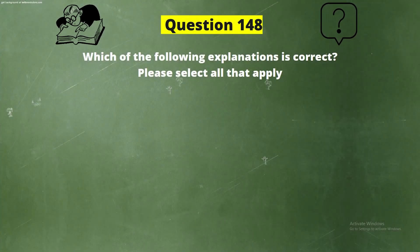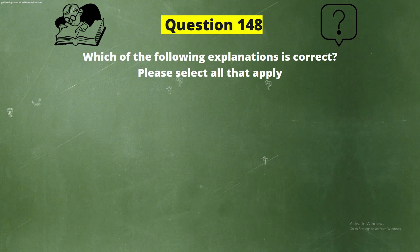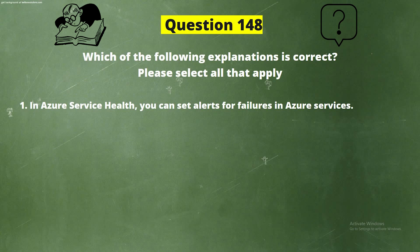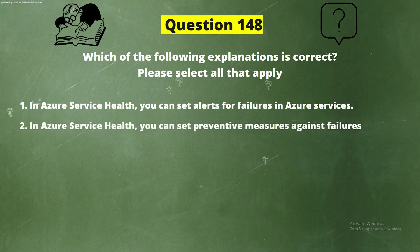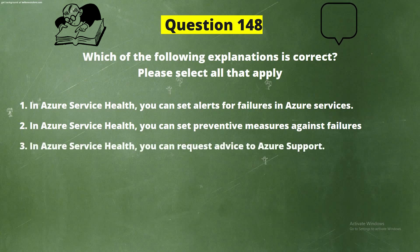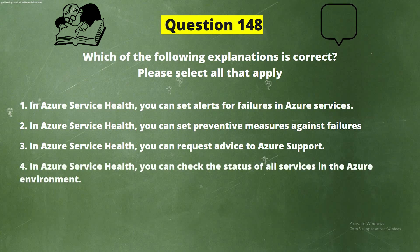Question 148. Which of the following explanations is correct? Please select all that apply. Option 1: In Azure Service Health, you can set alerts for failures in Azure services. Option 2: In Azure Service Health, you can set preventive measures against failures. Option 3: In Azure Service Health, you can request advice from Azure support. Option 4: In Azure Service Health, you can check the status of all services in the Azure environment.